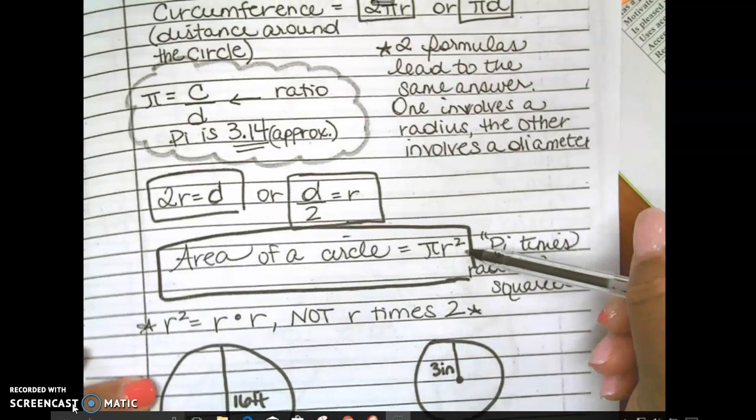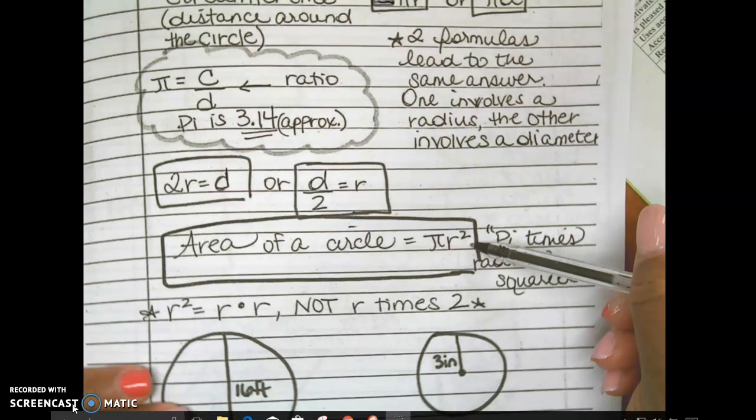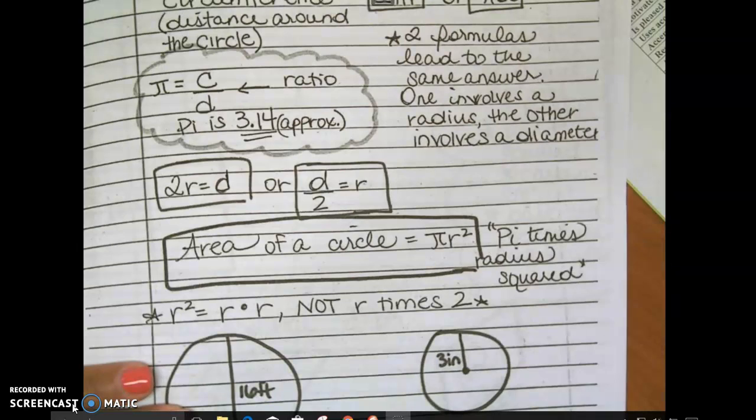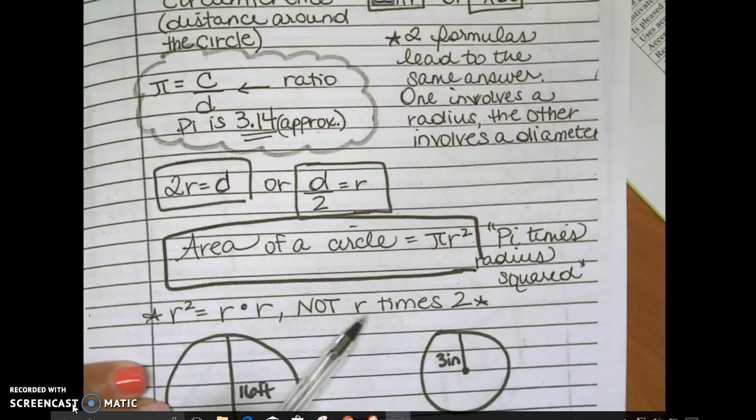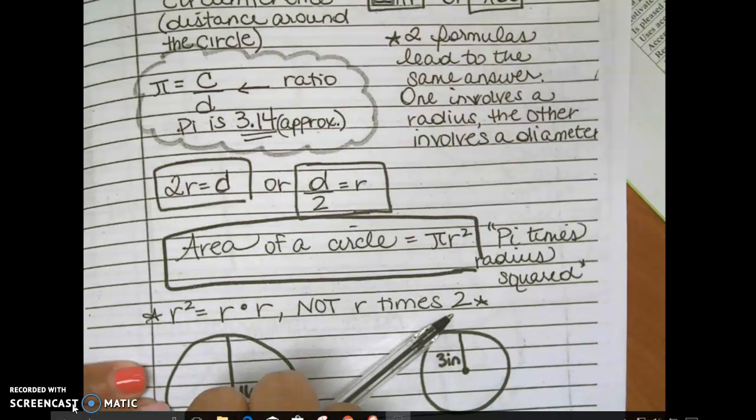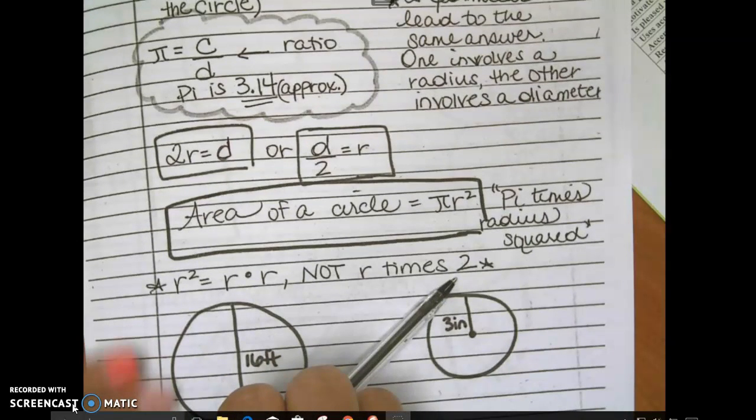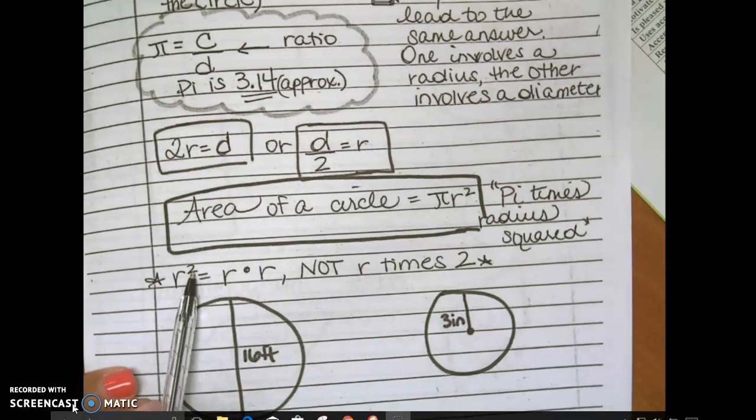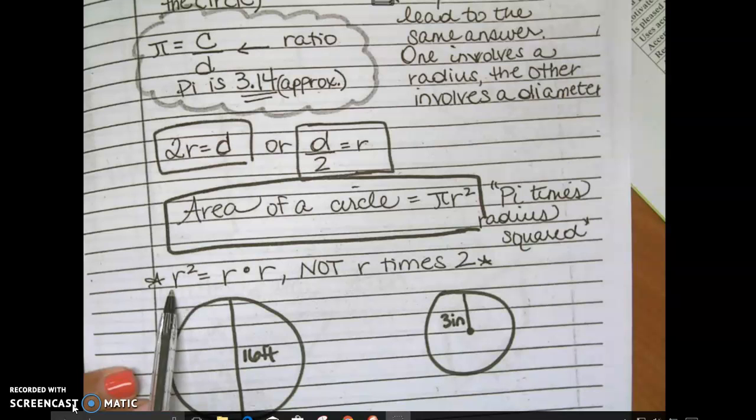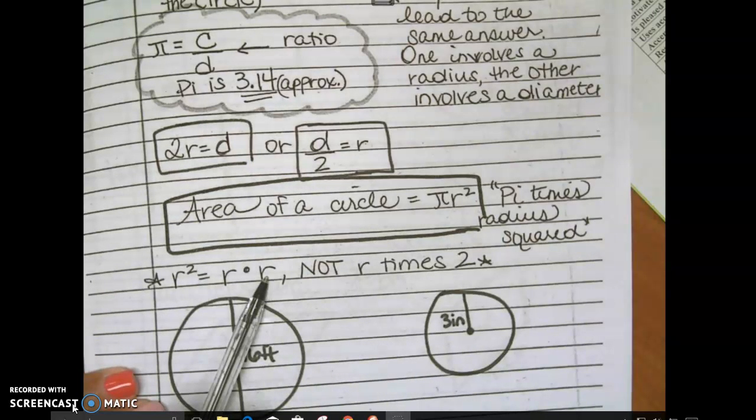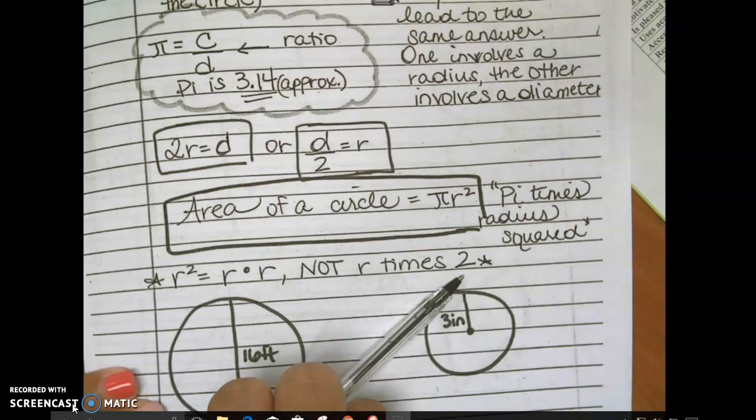Area of a circle is pi times radius squared. Radius squared is R times R. It is not R times 2. Repeat after me: radius squared. Radius squared is R times R, not R times 2.